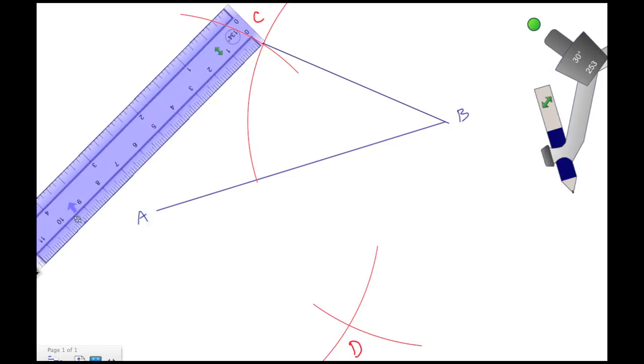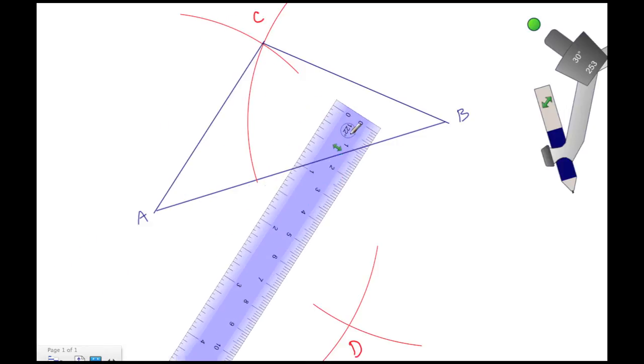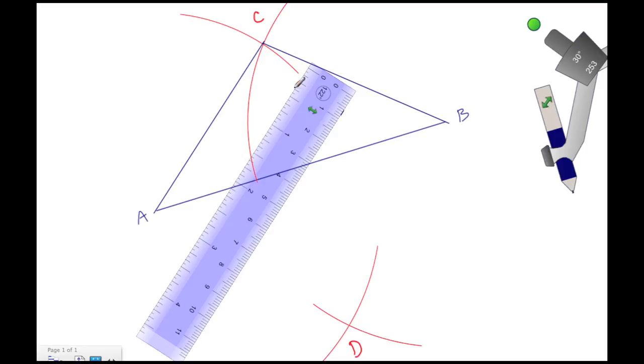We're lined up on C, now we're down here at A. Let's draw this line segment so that they intersect here. Now let's connect A and D.